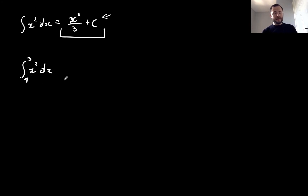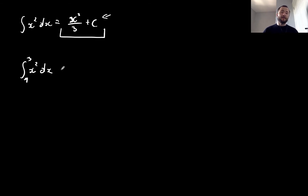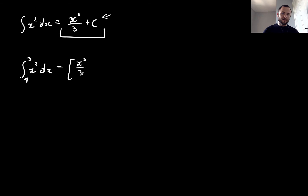Further down the road we'll discover this corresponds to the area under the curve of x squared, but for now we just need to remember this is the definite integral on this interval. I already know the integral of x squared dx is x cubed over 3, so I can rewrite this using square brackets as x cubed over 3 plus c, evaluated between 1 and 3.